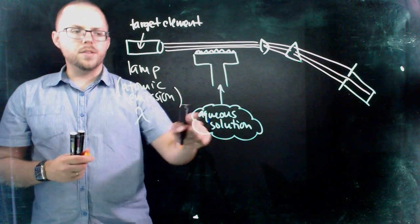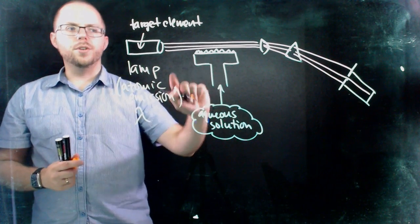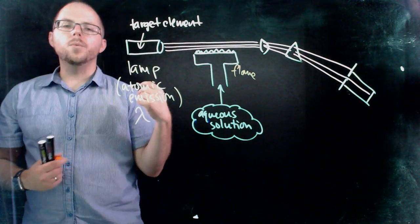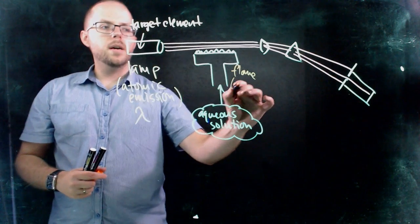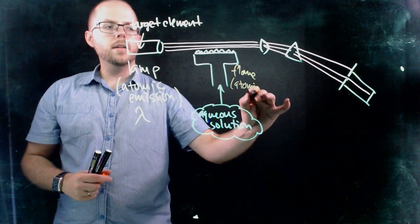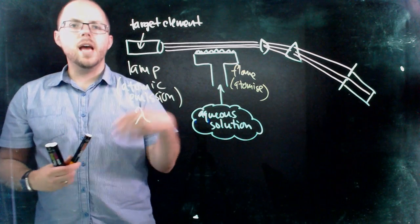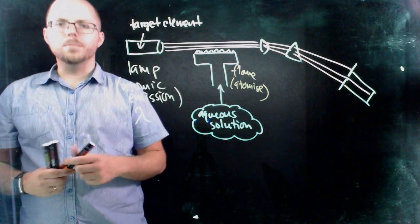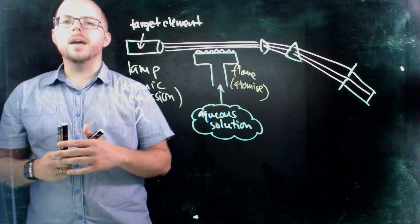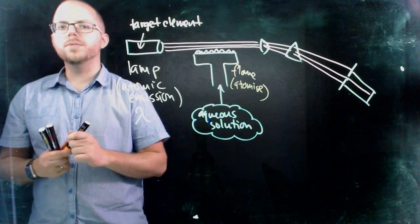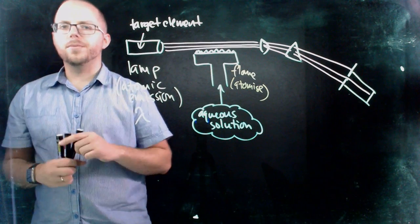So then moving over here, so this is where our aqueous solution goes in, so this is our flame. The idea being that it will heat up the sample, it's designed to atomize the sample. So a complex water-based mixture goes in and you end up with separate atoms of all the components in that mixture, the water is evaporated off, so you're just left behind with all of the things that are dissolved in the water in separate atomic form.